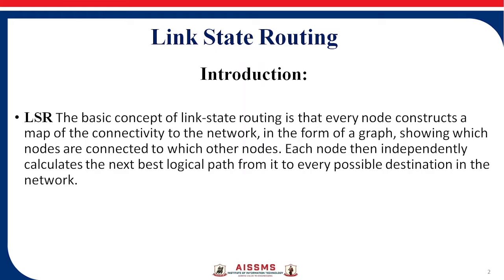The main aim of using LSR — Link State Routing — is to find the optimum path, the shortest path from one node to every other node in the network. The basic concept of Link State Routing is that every node constructs a map of connectivity to the network in the form of a graph, showing which nodes are connected to which other nodes. Each node then independently calculates the next best logical path to every possible destination in the network.